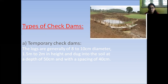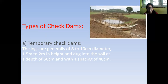Brushwood check dams help to reduce the velocity of runoff water and decrease the soil loss from the channels. Such dams are made up of brushwood, wooden planks and logs placed in a single row or a double row across the shallow channels.